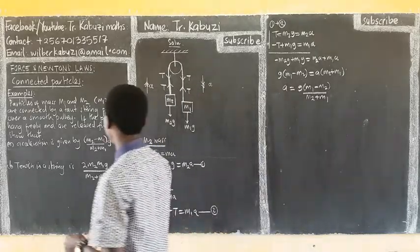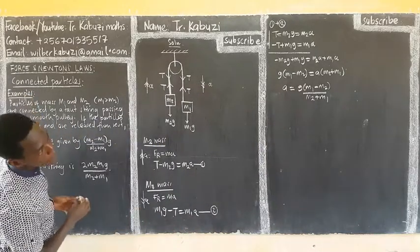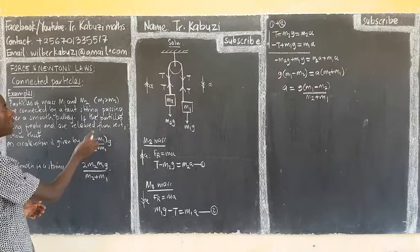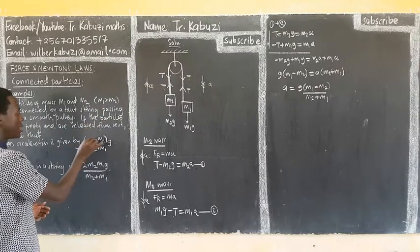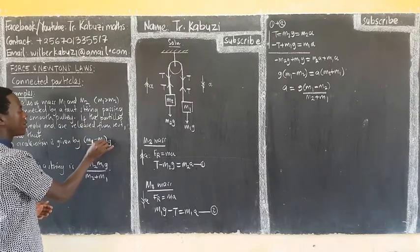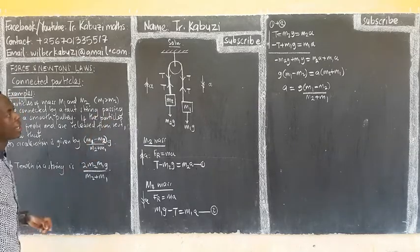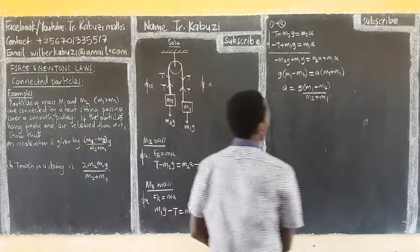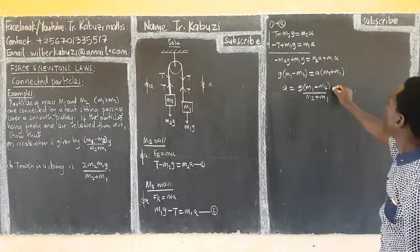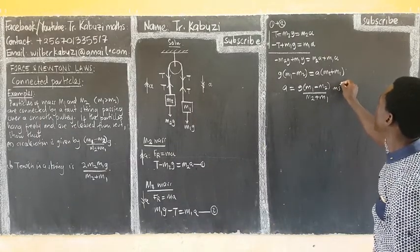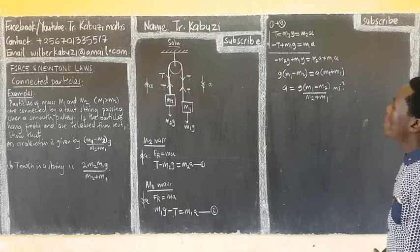Sorry, we have to change this, this is going to be M1, because this one is greater. This is just an error. Of course, you can get a negative, so the greater minus the smaller, meters per second square.